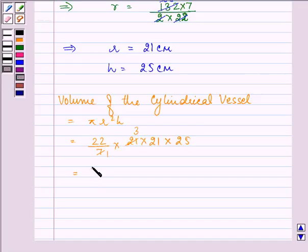So we have, on simplifying, the value or the volume of the cylinder as 34650 cm³. Now we need to convert cm³ into liters.